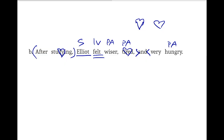There are just a few things to add, and that's to look for modifiers. We do see a modifier in the word 'very.' Eliot is hungry, but he's very hungry — 'very' is an adverb modifying how hungry he feels. Very hungry.